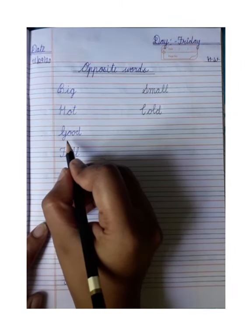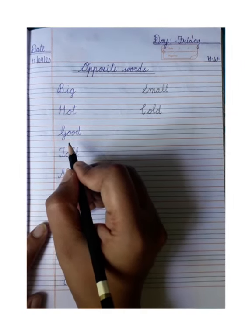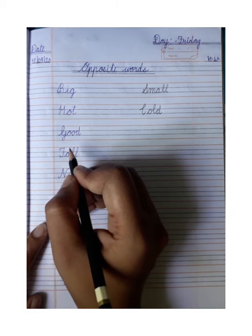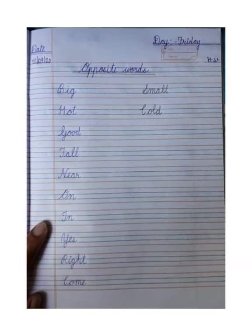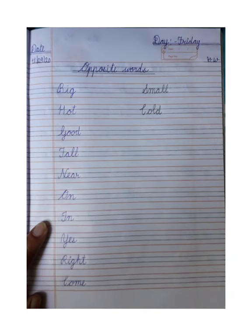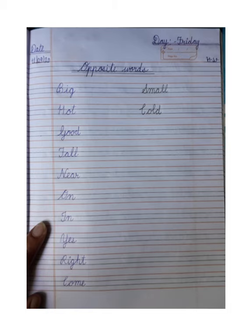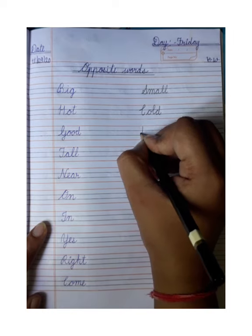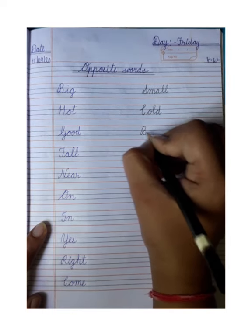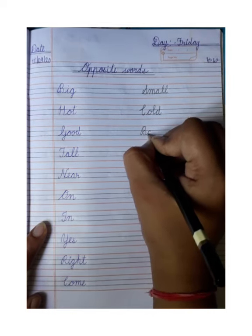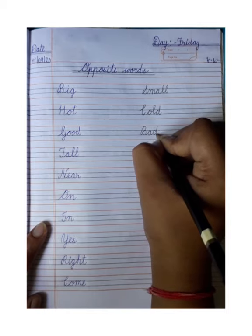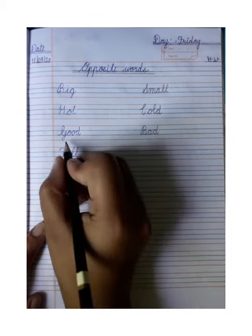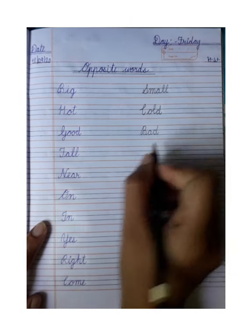Next, good — good yani achha. Bad — bad yani bura. So what is the spelling of bad? B-A-D, bad. Good ka opposite kya hoga? Bad.